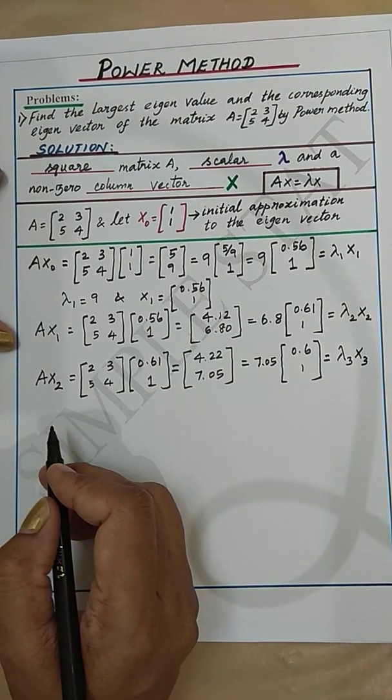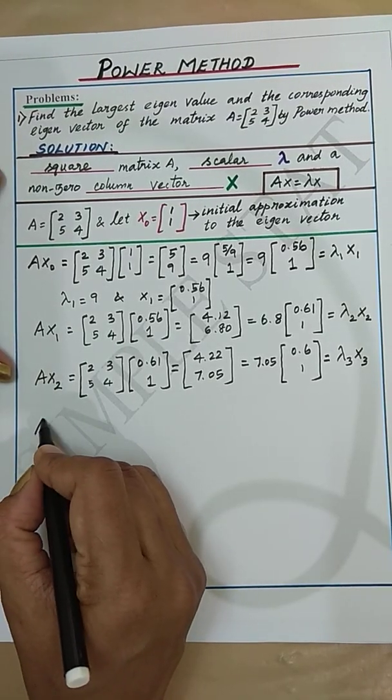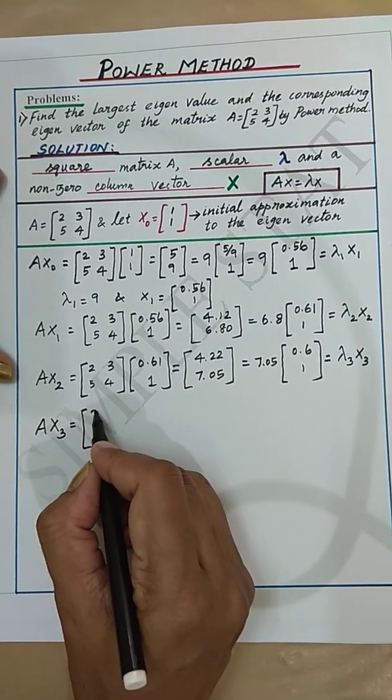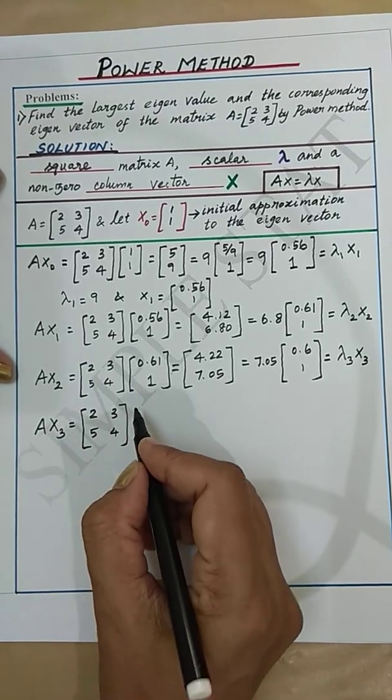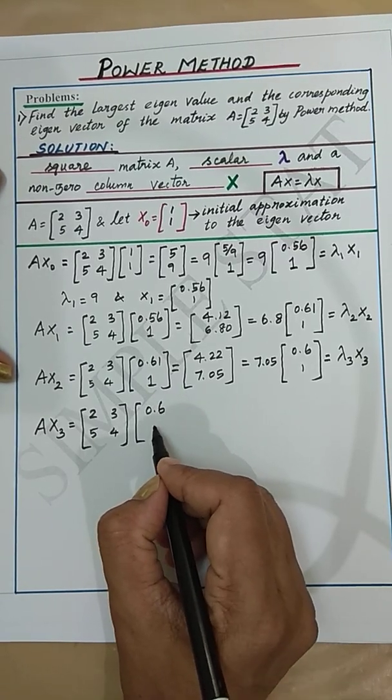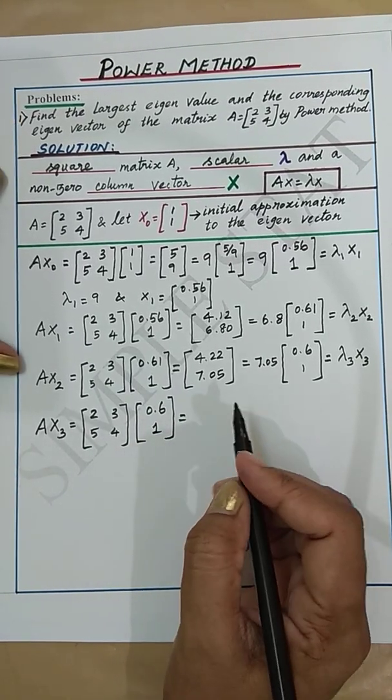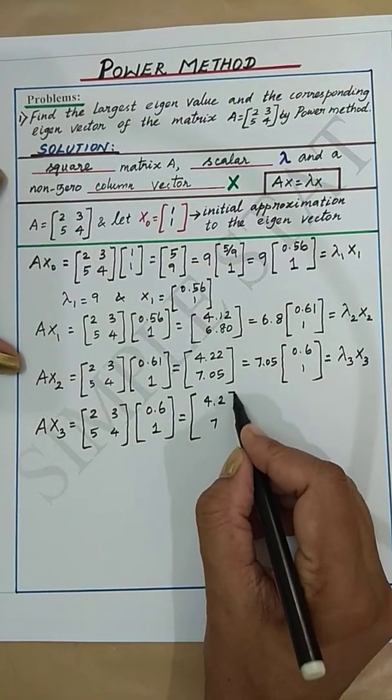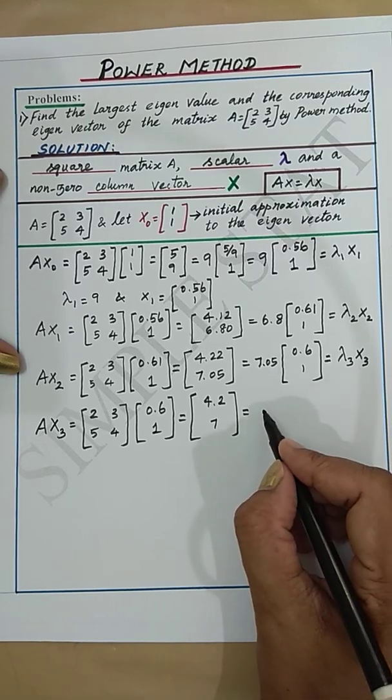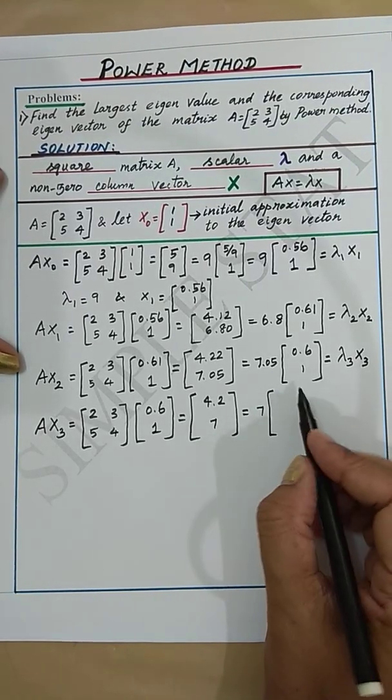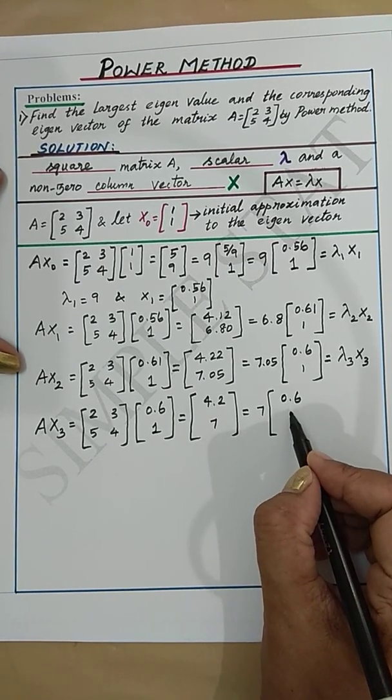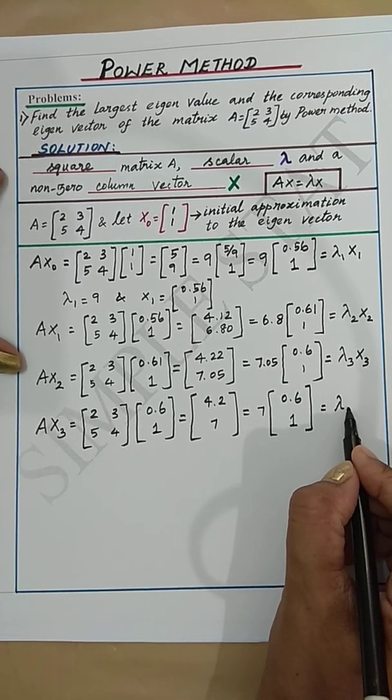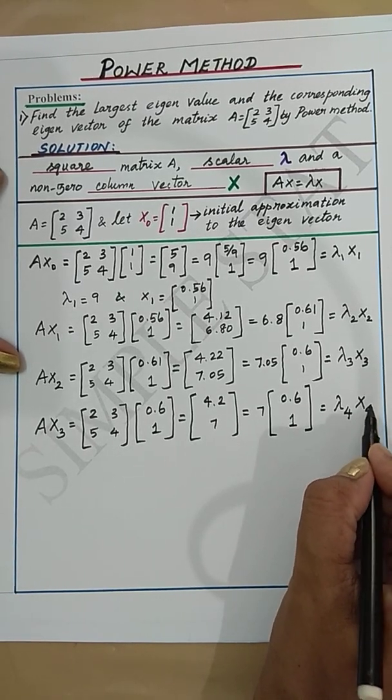Let's now proceed with one more iteration, namely A into X3 which gives [2 3; 5 4] into X3 which is [0.6; 1]. Here we get [4.2; 7]. Taking 7 outside the matrix we get 7 into [0.6; 1] which is written as lambda 4 into X4.